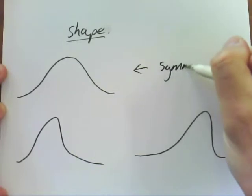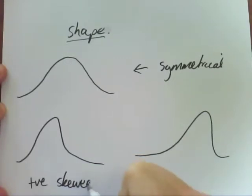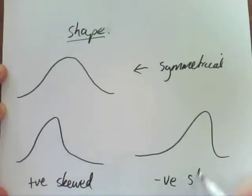This one here is symmetrical, this one here is positively skewed, and this one over here is negatively skewed.